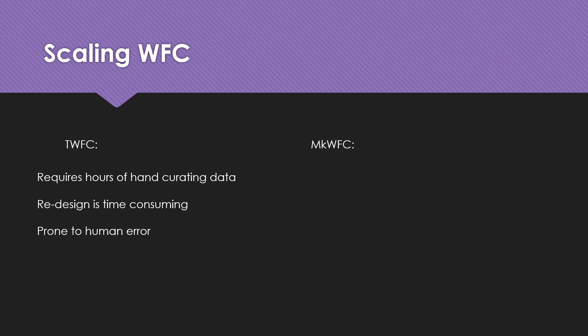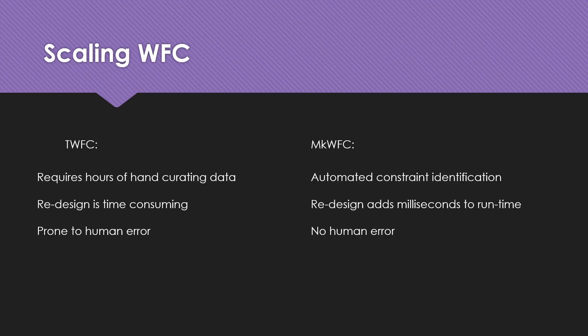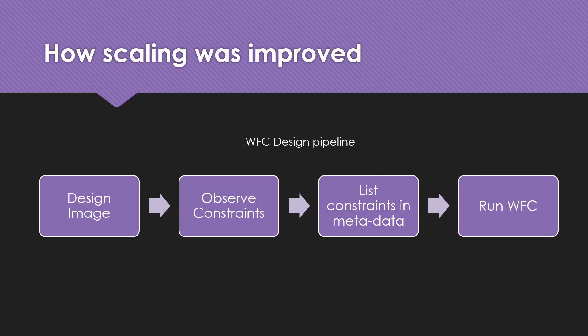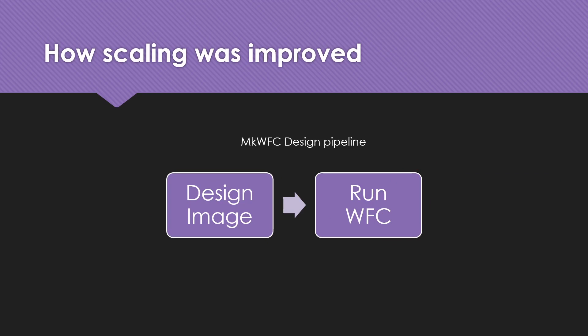In terms of scaling, tiling wave function collapse requires hours of hand-curating data, and any redesign is time-consuming and prone to human error. Markov wave function collapse, however, automates the constraint identification step so redesign only adds milliseconds to the runtime, and it also eliminates human error. The MKWFC design pipeline is simplified to just designing an image and executing the MKWFC algorithm.